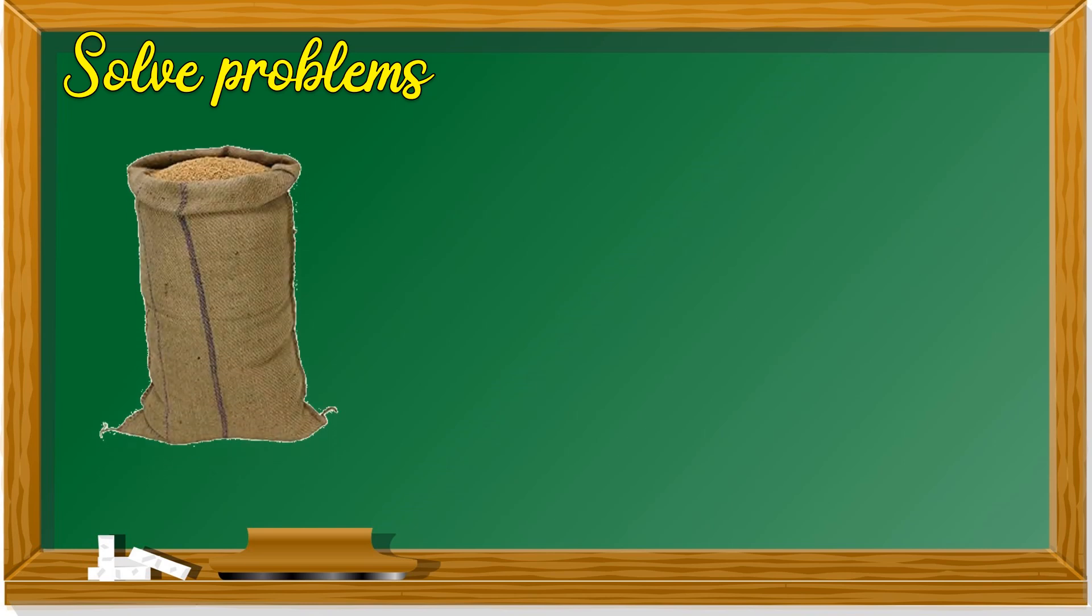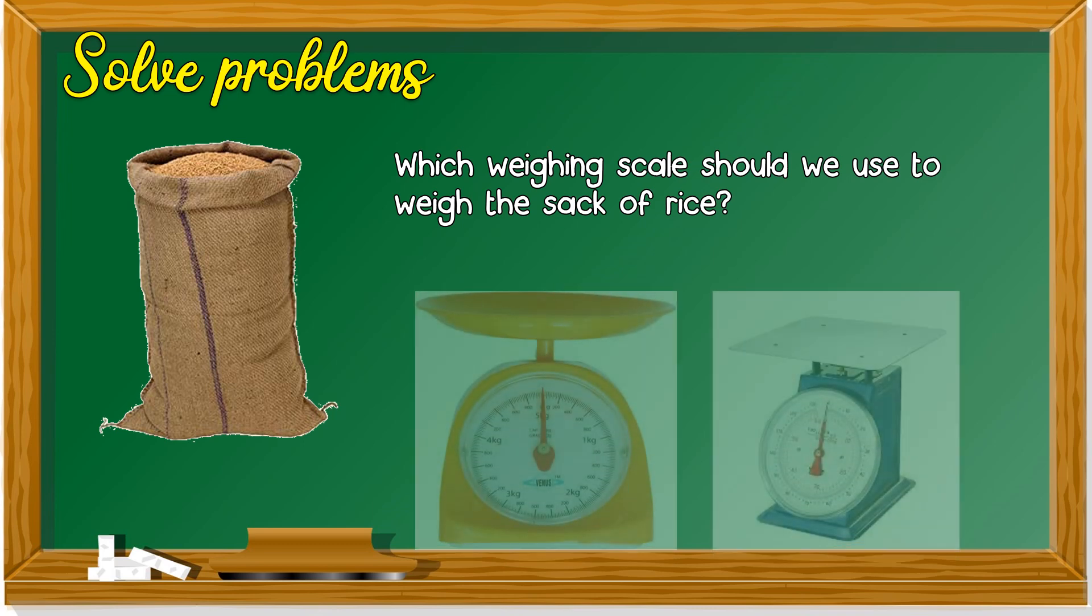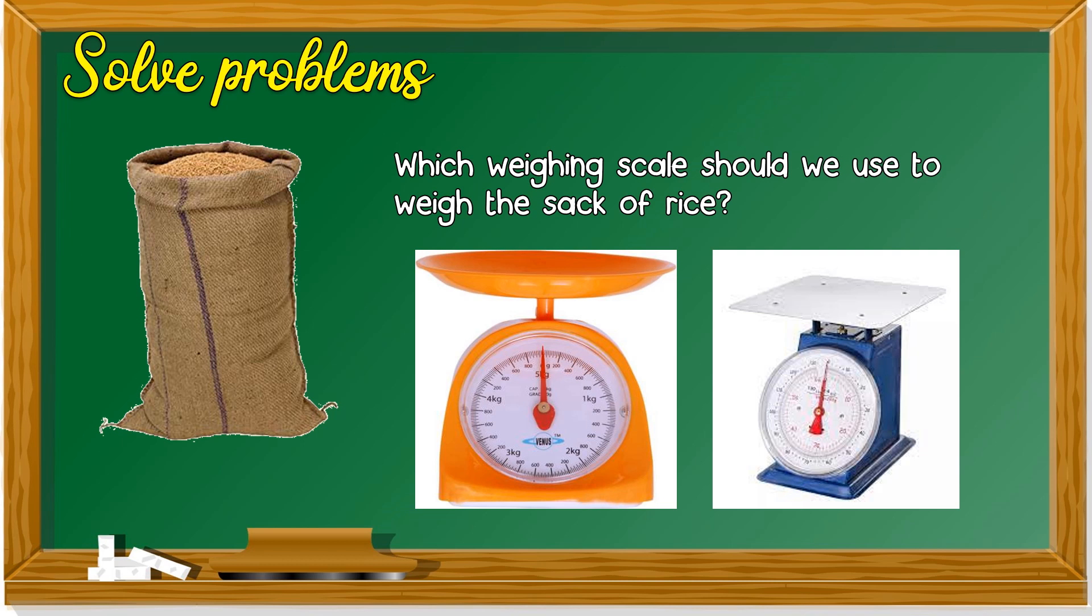Last question. Which weighing scale should we use to weigh the sack of rice? Should we use the orange scale or the blue scale? If we look at it closely, we can see that the orange scale maximum is about 5 kilogram. You see, 1, 2, 3, 4, 5.